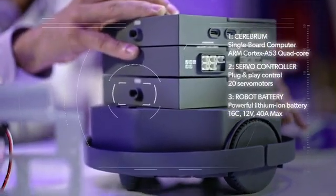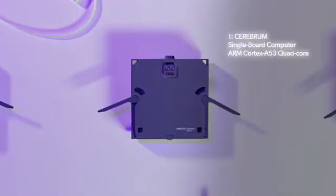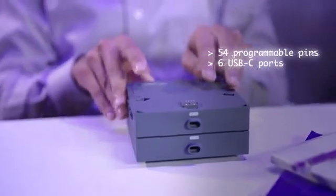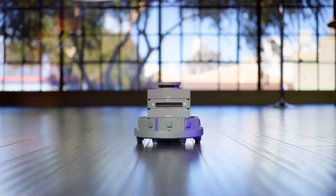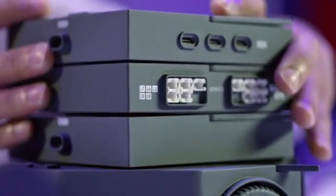MindKit has three core modules. The Cerebrum is a single-board computer where you control the robot's sensing and decision-making. The servo controller helps create and control movement. You can easily connect up to 20 servo motors simultaneously.